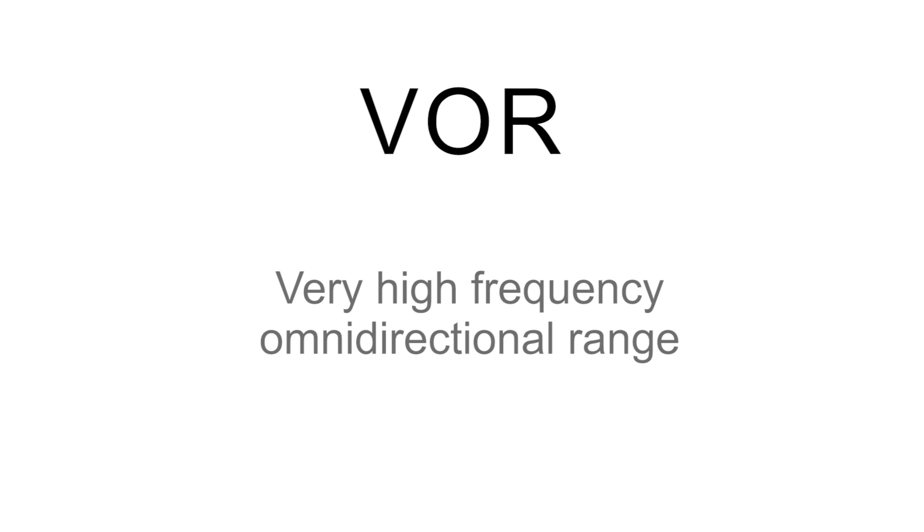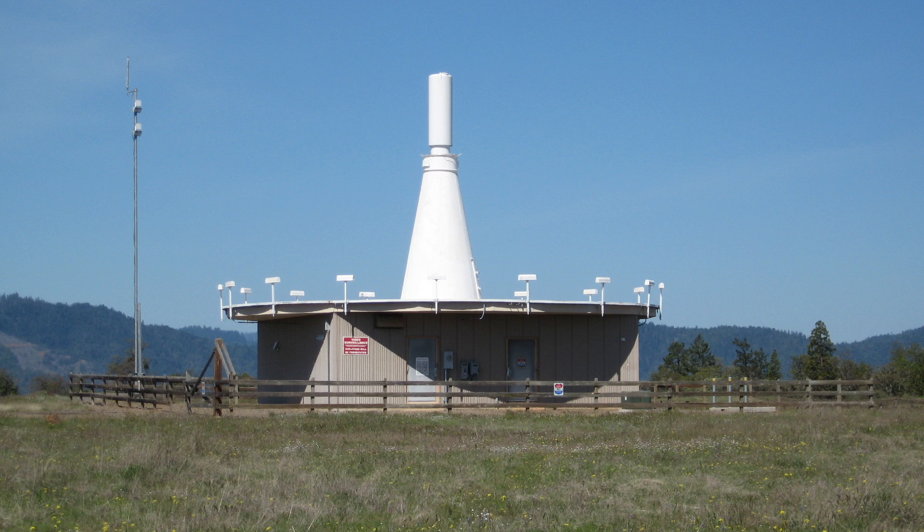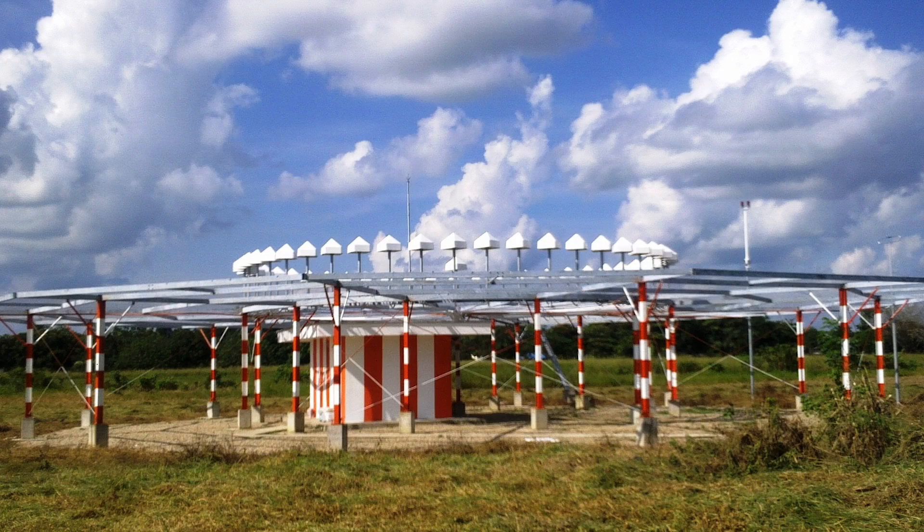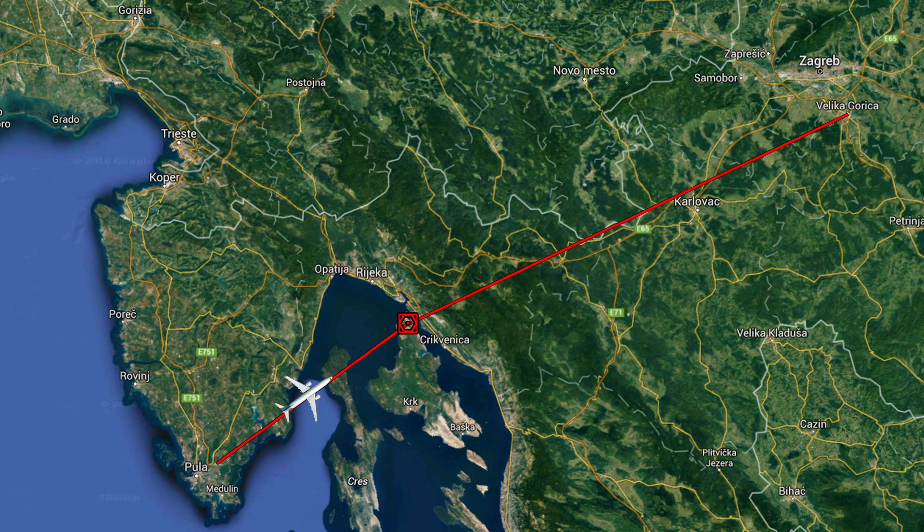VOR, or a very high frequency omnidirectional range, is a type of radio aid used in aircraft navigation. The principle is to fly a specific magnetic track to and from the station, so that the aircraft can reach its destination.